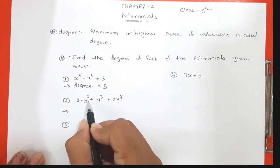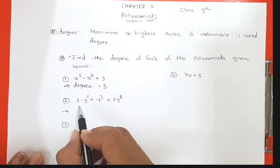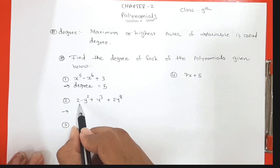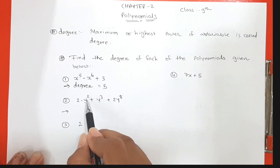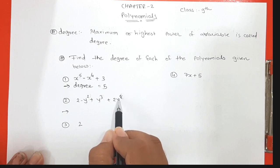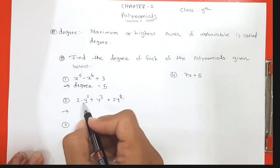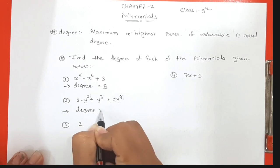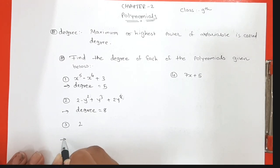The second question is 2 minus y squared plus y cubed plus 2y raised to 8. In this expression, the variable is y. The powers of y are 2, 3, and 8. The maximum power is 8. So the degree of this polynomial is equal to 8.